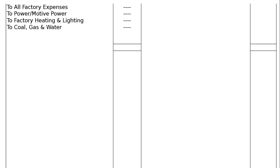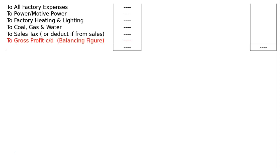All factory expenses go on the debit side of the trading account: to power or motive power, to factory heating and lighting, to coal, gas and water, and to sales tax (or alternatively deduct it from sales — either method is acceptable). Then total the credit side, bring it to the debit side, find the gap — that is 'to gross profit carried down,' which is the balancing figure.